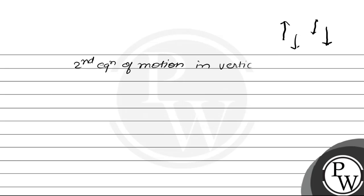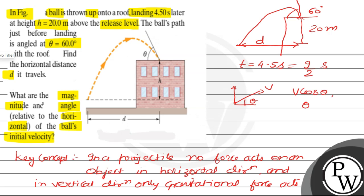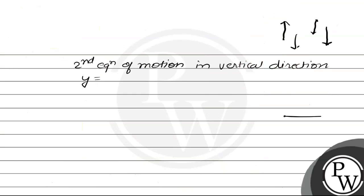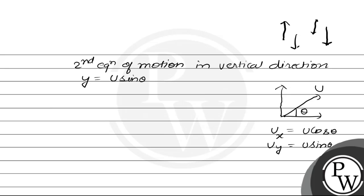We will use the second equation of motion in the vertical direction. The distance y covered equals initial velocity times time plus half acceleration times t squared. The ball was fired with speed u at angle θ, so the initial velocity in the x-direction is u·cosθ and in the y-direction is u·sinθ. So y = u·sinθ·t − ½g·t², using minus g because the ball travels upward while acceleration acts in the opposite direction.